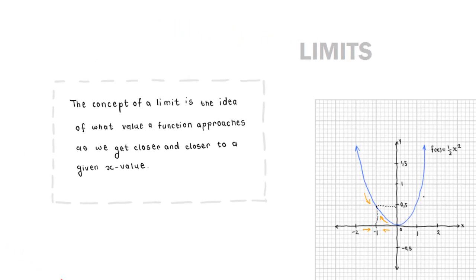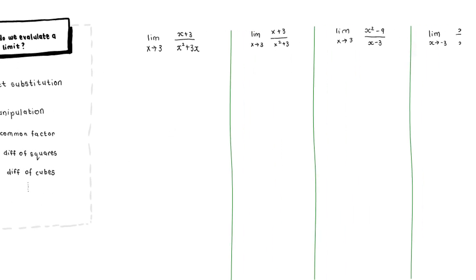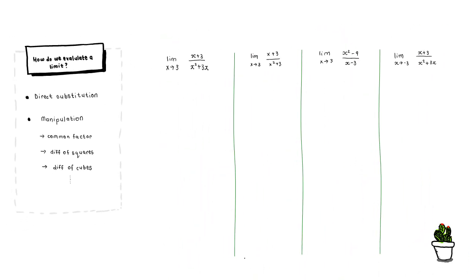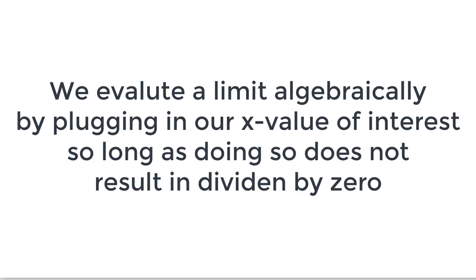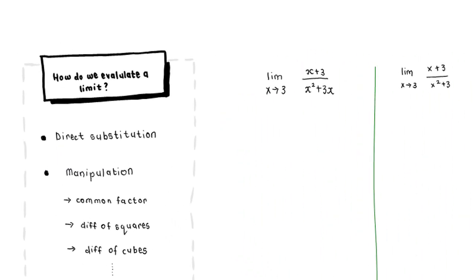Because the definition of a limit is what is the function value as we get closer and closer to a given point, the function doesn't necessarily have to be defined at that point for the limit to exist. So the question arises: how do you evaluate a limit? We can evaluate limits graphically, like we just did, or algebraically, which is what we're going to concentrate on. We evaluate a limit algebraically by simply plugging in the x value of interest, so long as doing so does not result in division by zero. The two methods are: first, direct substitution; and second, manipulation, if direct substitution leads to division by zero.